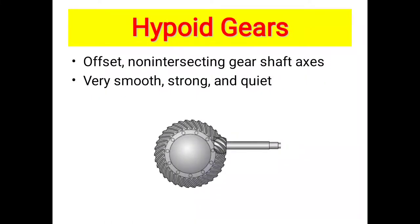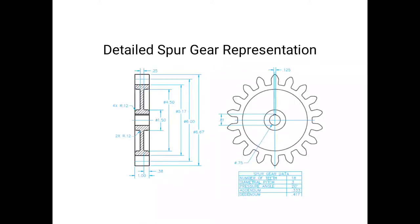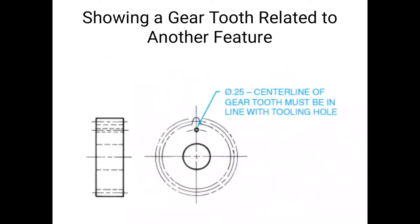Non-intersecting shafting gears: crossed helical gears, hypoid gears, and worm gears. Hypoid gears: offset non-intersecting gear shaft axis, very smooth, strong and quiet. Hypoid gear representations: simplified gear representation using diagram showing root diameter, outside diameter, and pitch diameter. This diagram is made in AutoCAD. Detail spur gear representation: number of teeth 18, diameter pitch 3, pressure angle 20 degrees, addendum 0.30, whole addendum 0.41. Showing gear tooth related to another feature: diameter 0.35, centerline of gear to thrust must align with cooling hole.